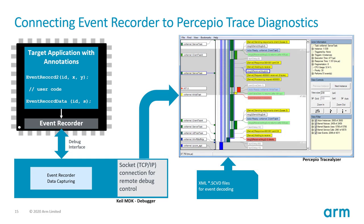We have an interface for our event recorder technology that connects to the Persepio Tracealyzer. Tracealyzer can read our XML description files to decode events. It works via a socket interface — a TCP/IP connection to our tooling — and relies on the technology we have developed. I now hand over to Johan, who will explain the benefits of the Persepio tools.